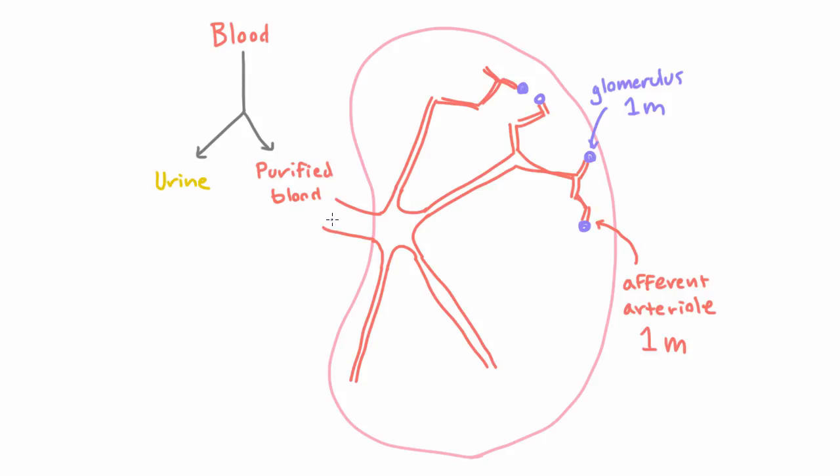And another thing you should internalize right off the bat is that this is not just something that the blood going to the kidney can do. This is what all the blood going to the kidney does. Every red blood cell that comes through the renal artery is going to end up going through an afferent arteriole and then to a glomerulus.